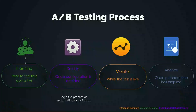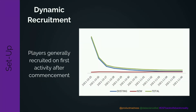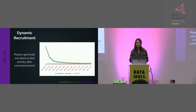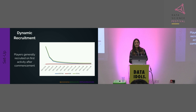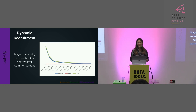The next part is setup. Once the configuration is decided, we begin the random allocation of users. We have an admin tool where the product team can configure the variants themselves, and we have dynamic recruitment — players are generally recruited into the study on their first activity after the A/B test starts. A majority of players enter when the test starts — these are our existing engaged players — and then over time more players enter, including less engaged players, those who've taken a break, and new players.